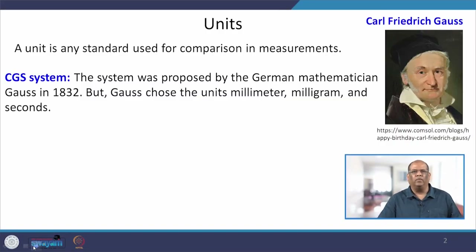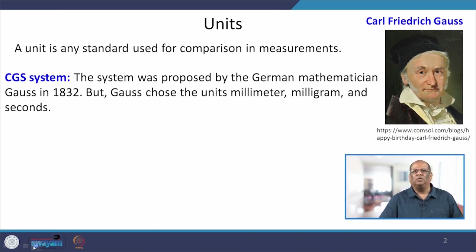The first system is called the CGS system. It was proposed by German mathematician Gauss in 1832 — full name Carl Friedrich Gauss. Gauss chose these units in terms of millimeter, milligram, and seconds.